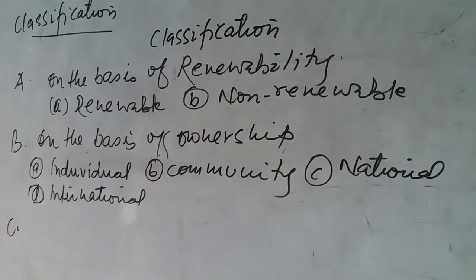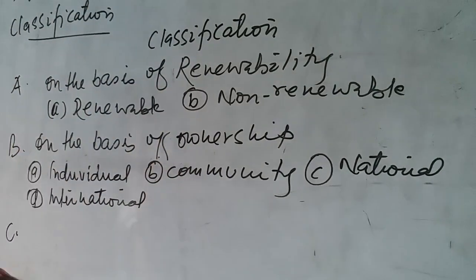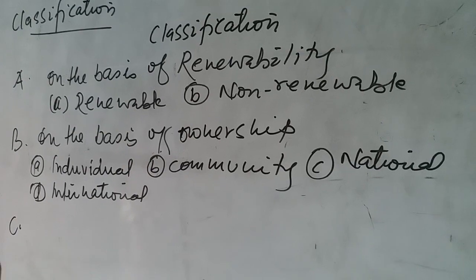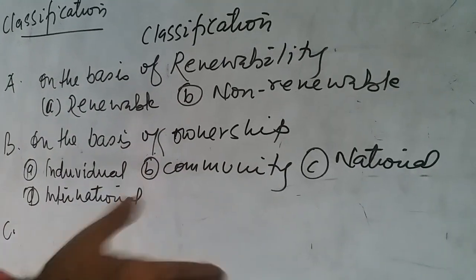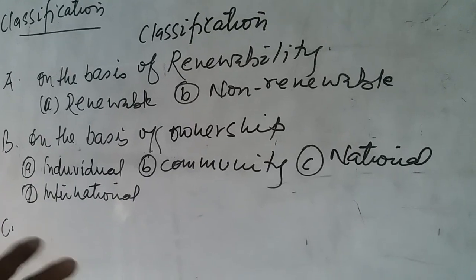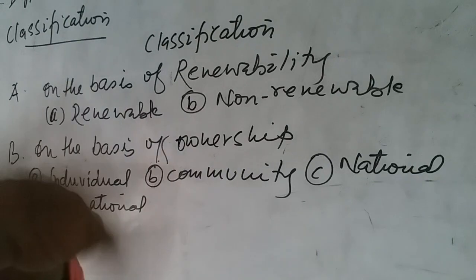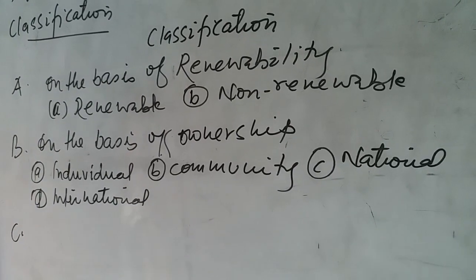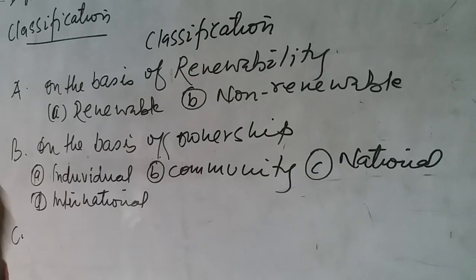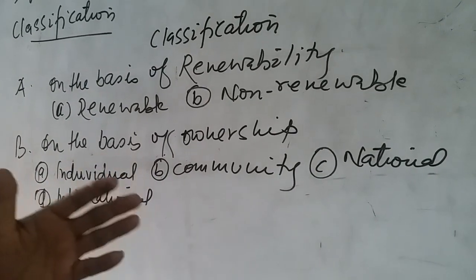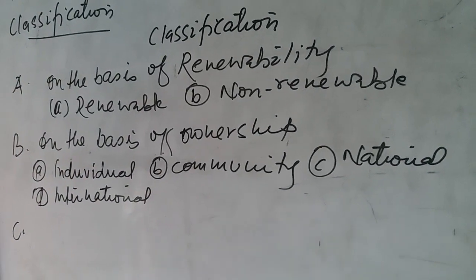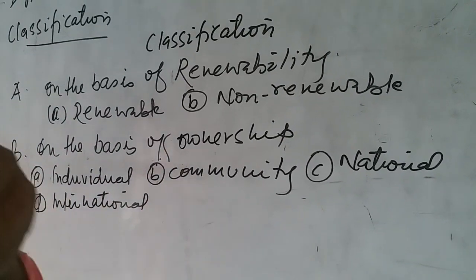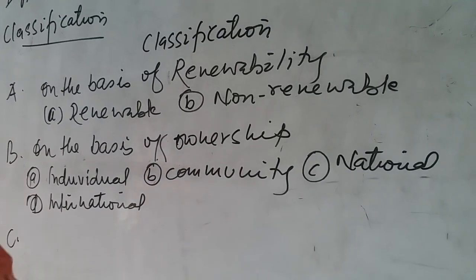It is important to know what natural endowments or neutral stuff means. The things provided by nature on the earth that are untouched by human beings are called natural endowments or neutral stuff. Because they are not used by human beings, they remain neutral. But when human beings utilize them to fulfill their needs, using their skilled mind, technology, science, education, and training, those neutral things become resources.